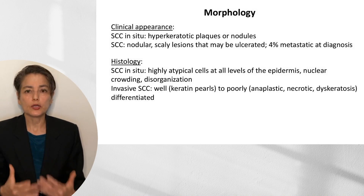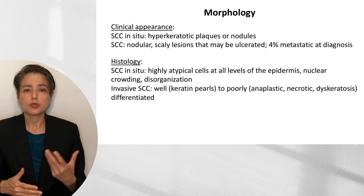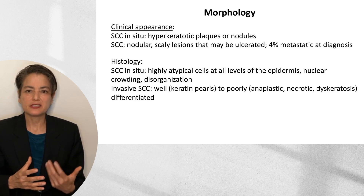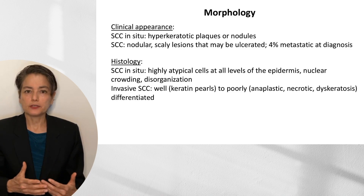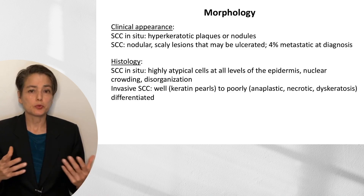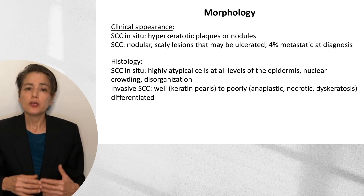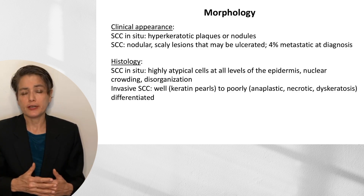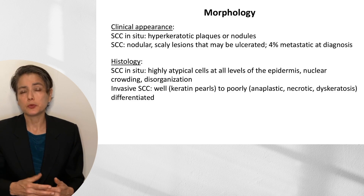Clinically, an in-situ lesion will be somewhat similar to an actinic keratosis — a hyperkeratotic plaque that may form a nodule. When invasive, you get more of a nodular form: scaly with surface ulceration. About 4% will be metastatic at diagnosis. Histologically, squamous cell carcinoma shows highly atypical cells at all levels of the epidermis — distinguishing it from actinic keratosis — with nuclear crowding and disorganization. Well-differentiated carcinomas show keratin pearls and obvious desmosomes. Poorly differentiated tumors may be anaplastic, necrotic, or show dyskeratosis — single-cell keratinization.